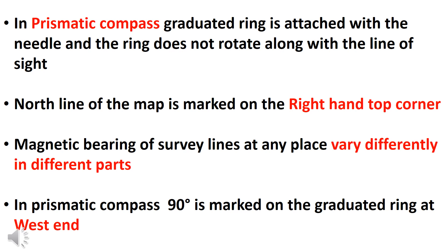Magnetic bearing of surveyor lines may vary differently in different parts. Magnetic bearing varies, whereas true bearing is constant.